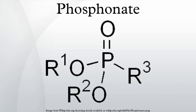Basic properties: phosphonates feature tetrahedral phosphorous centers and are structurally closely related to phosphorous acid. Phosphonate salts are the result of deprotonation of phosphonic acids, which are diprotic acids: RPO(OH)2 + NaOH → RPO(OH)(ONa), then RPO(OH)(ONa) + NaOH → RPO(ONa)2. Phosphonate esters are the result of condensation of phosphonic acids with alcohols.